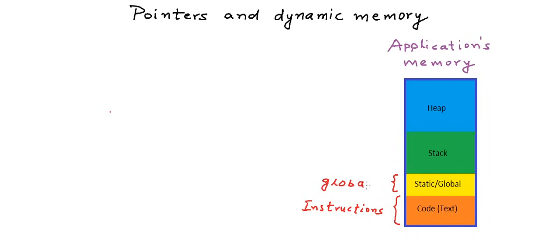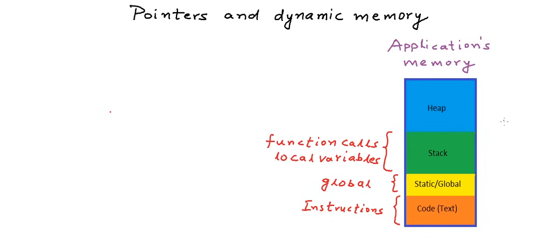The static or global variables are the variables that are not declared inside a function and that have the whole lifetime of an application. They are accessible anywhere during the whole lifecycle of the application as long as the application is running. One section of the memory is used to store all the information of function calls and all the local variables. Local variables are declared inside a function and they live only till the time the function is executing.